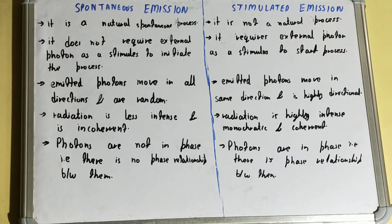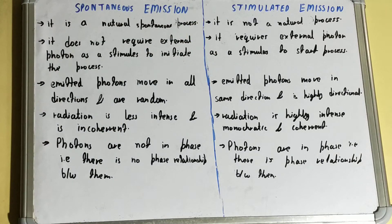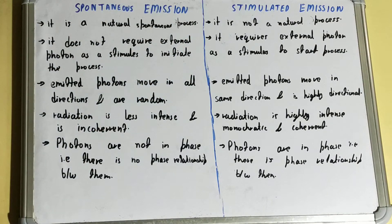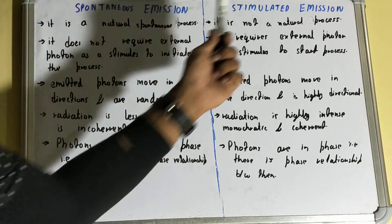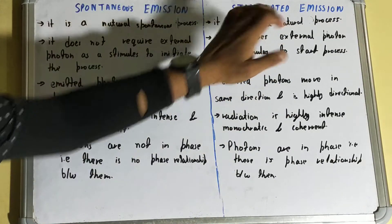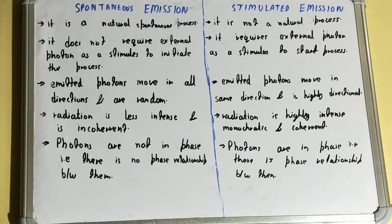In this video, we'll look at the difference between spontaneous emission and stimulated emission. Spontaneous emission is a natural, spontaneous process — it happens naturally and doesn't need any external inducement or external photon to start it. Stimulated emission, on the other hand, is not a natural process; to make it happen, we need to provide an external inducement or external photon to start it.